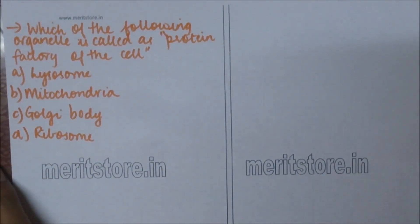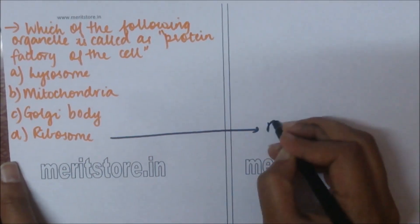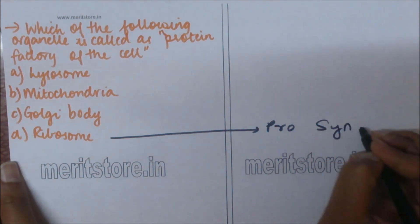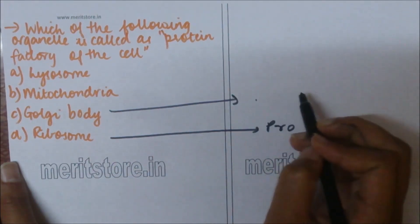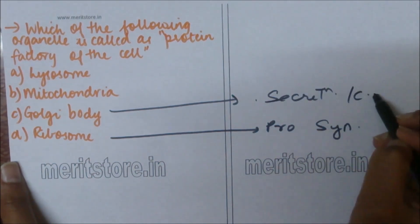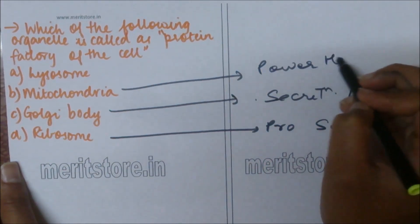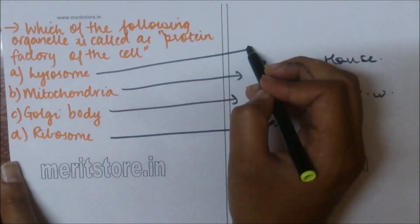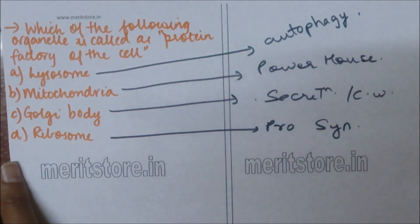Which of the following organelles is called the protein factory of the cell? A) lysosome, B) mitochondria, C) Golgi body, D) ribosomes. Ribosomes help in protein formation or protein synthesis, so they are known as the protein factory of the cell. Golgi body helps in formation of plasma membrane, secretion, and cell wall formation. Mitochondria is known as the powerhouse of the cell as it produces ATP. Lysosome function is autophagy and destruction of detritus in the cell.